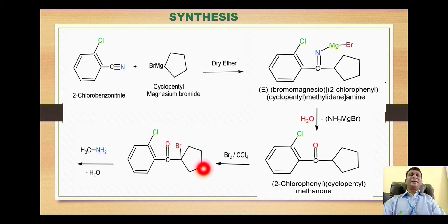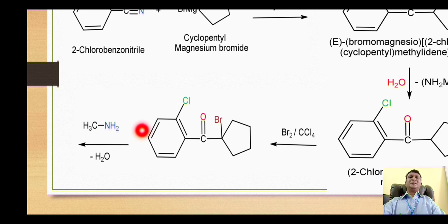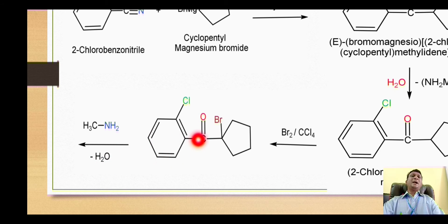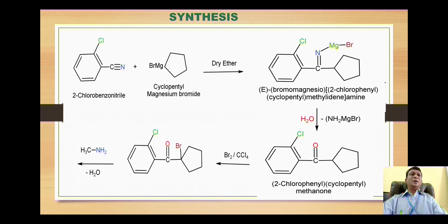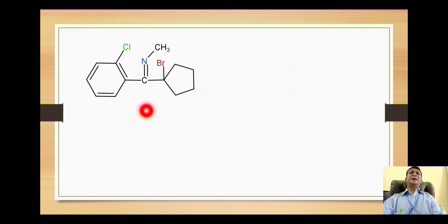This brominated derivative is then reacted with methylamine (methanamine). The amine attacks the carbonyl group via a nucleophilic addition reaction. Two hydrogens and one oxygen are removed as a water molecule, and this carbon forms a double bond with nitrogen. This gives us the formation of an imine — a compound containing a double bond between carbon and nitrogen.